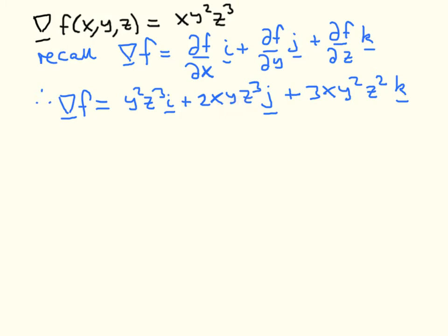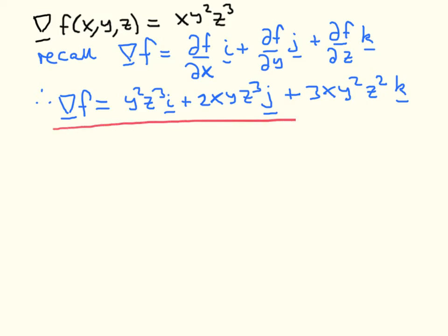And finally, differentiating with respect to Z, we pull a factor of 3 in front; X and Y squared are treated as constants, and the power 3 is reduced to the power 2. This is our result for this exercise. Let's now go on to the next solution.